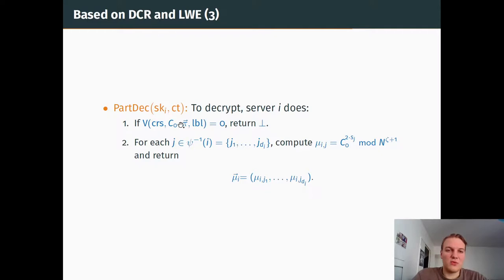To compute a partial decryption, we first check the proof. If the proof is accepted, then we compute c_0 to the 2x for every coordinate that was given to us by the LISS, and we return the set of everything, of every partial decryption we did.